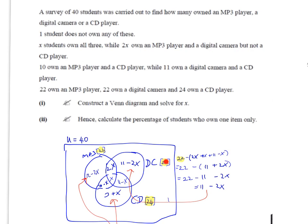We know that there's 22 in the whole set of digital cameras because it says 22 own a digital camera. So there's 22 in here all together, but we've already put 2x, x, and 11 minus x in here. So really, this area here is the difference between 22 and all of these, so we need to take all of these from 22.